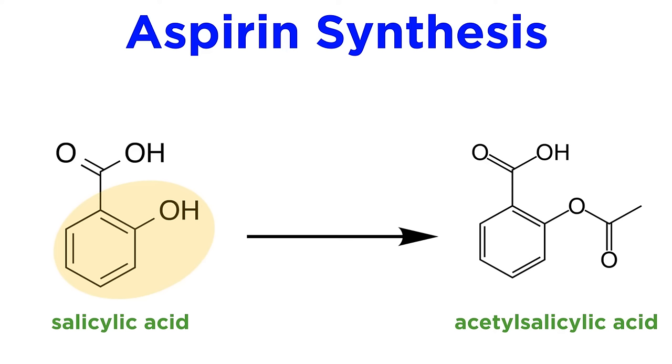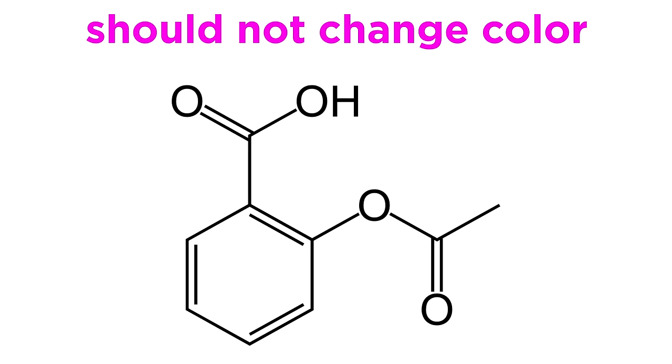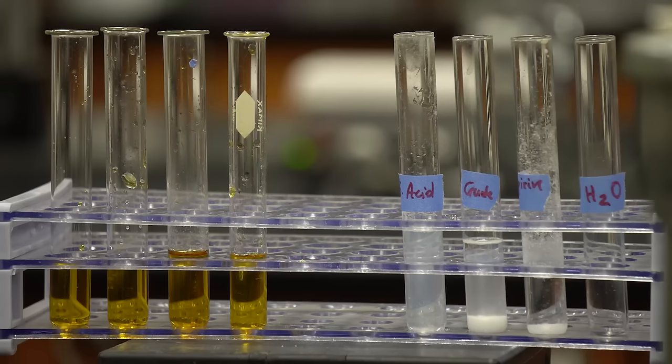So if we add both the starting material and our product to tubes, and introduce iron-3 chloride, the salicylic acid should turn purple and aspirin should remain brown. So if we have made and purified our aspirin, it shouldn't change color. If it does, either we didn't make any aspirin, or we've made it but didn't correctly separate it from the starting material. So let's test our products. Here we have a tube of our starting material, a tube of our crude product after the first crystallization, and a tube of our final product. We've also added a tube of pure water as our control to make sure that our test works correctly.